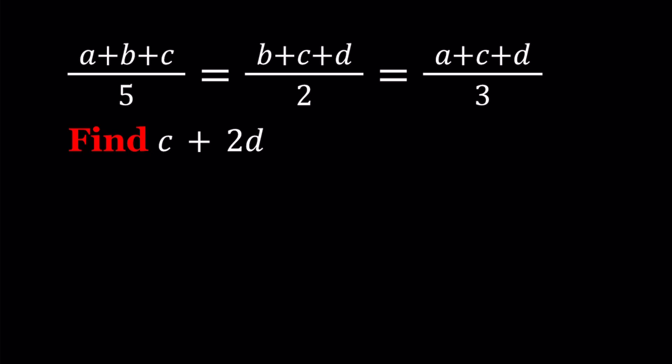Notice that we have four variables but kind of like three expressions. So we can find the value of c plus 2d but we can't find individual values for c and d.